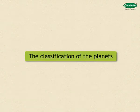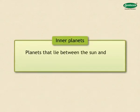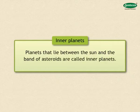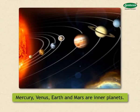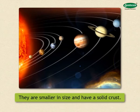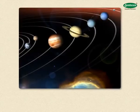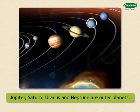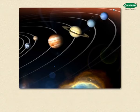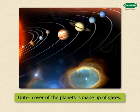The classification of the planets. Planets are divided into two classes with reference to the band of asteroids: inner planets and outer planets. Planets that lie between the sun and the band of asteroids are called inner planets. Mercury, Venus, Earth and Mars are inner planets. They are smaller in size and have a solid crust. Planets beyond the band of asteroids are called outer planets. They include Jupiter, Saturn, Uranus and Neptune. They all have rings around them made of innumerable rock and dust particles. These planets are bigger in size and their outer cover is made up of gases.